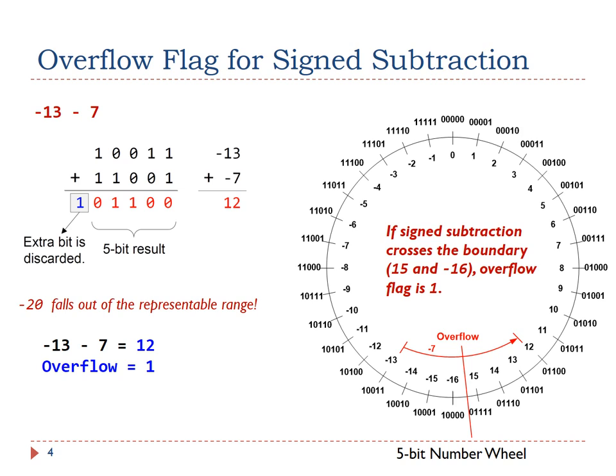We can detect overflow by using the number wheel. If subtracting a positive number, we move along the wheel counterclockwise. On the other hand, if subtracting a negative number, we move along the wheel clockwise. Whenever the movement crosses the boundary between 15 and negative 16, overflow is generated, and the overflow flag is set.